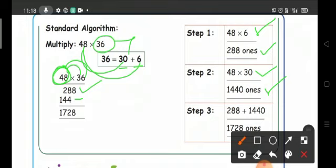Add the numbers 288 plus 1440. Here 8, and 8 plus 4 equals 12. Write 2, carry forward 1 to this place. 1 plus 2 equals 3, 3 plus 4 equals 7. So the answer is 1728.